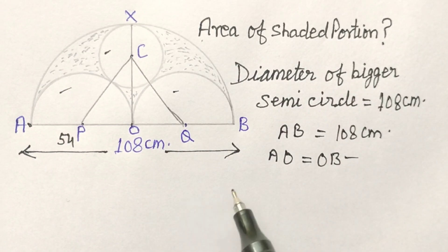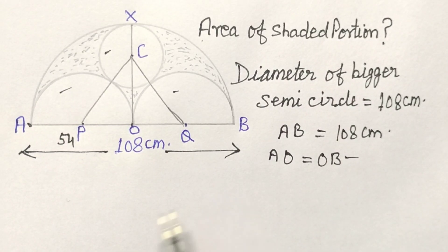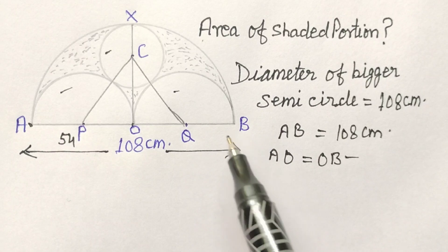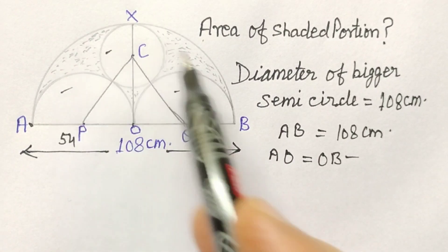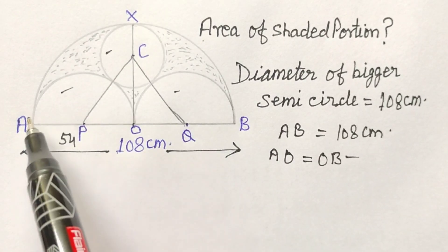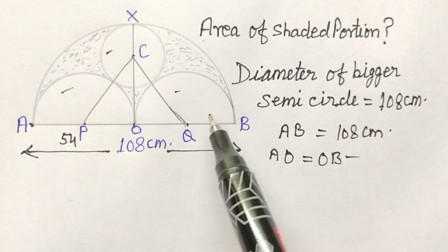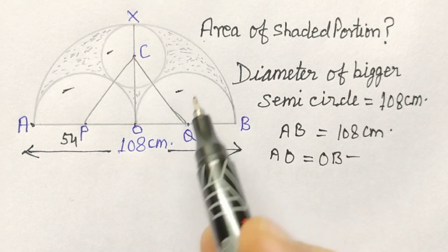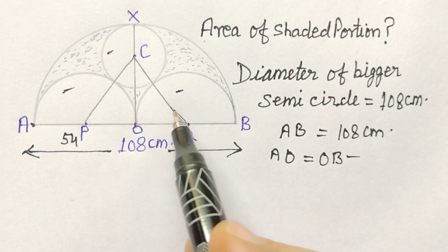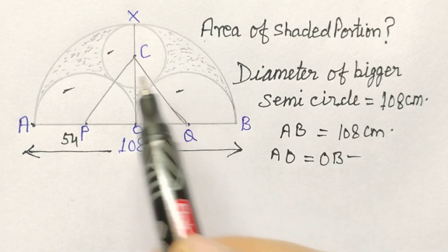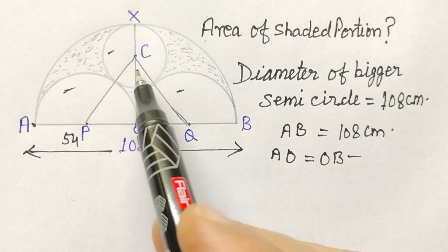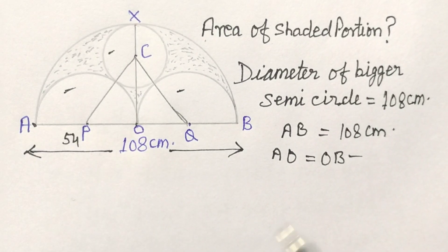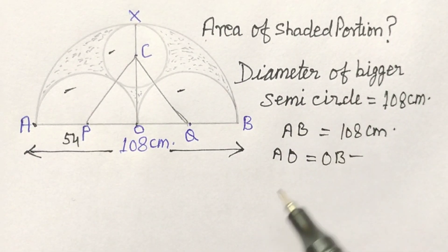Hi friends, welcome back to my channel. Today we have a nice problem. Here 3 semicircles — a bigger semicircle and two smaller semicircles. And this is a complete circle. So let's start.